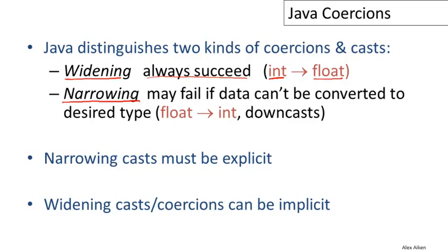Now, narrowing casts may fail if the data can't be converted to the desired type. So in particular float to int. This will work fine. Something like 2.0 can be converted in an obvious way to 2. But if you're converting something that doesn't have an integer representation, something like 2.5.